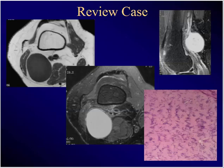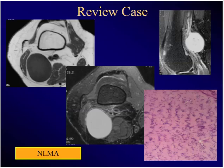Young person, soft tissue mass in the thigh, totally asymptomatic except for the mass — this histology, what is it? Notice this soft tissue mass. What's this? Nuclear palisading. Neurolemmoma.